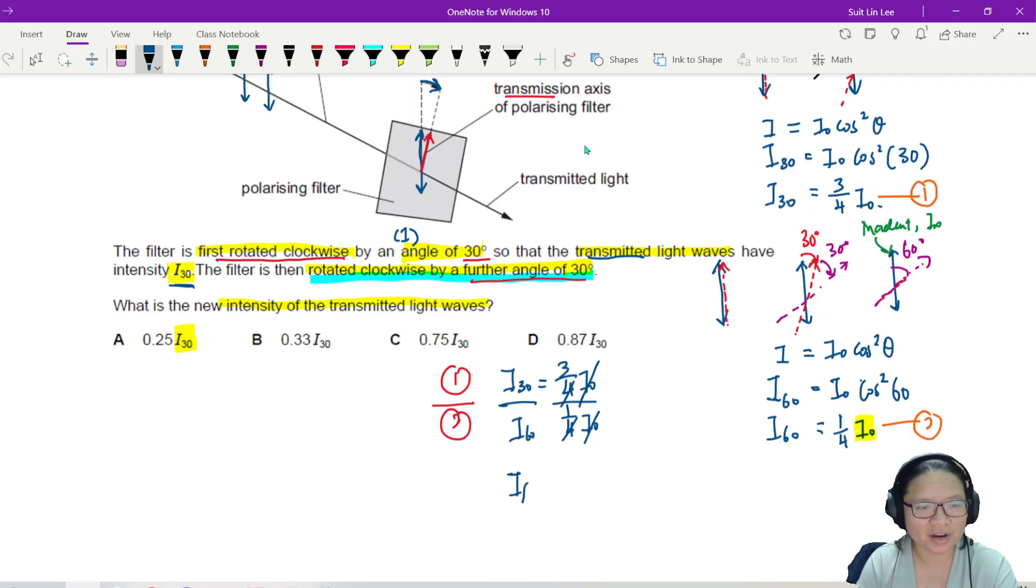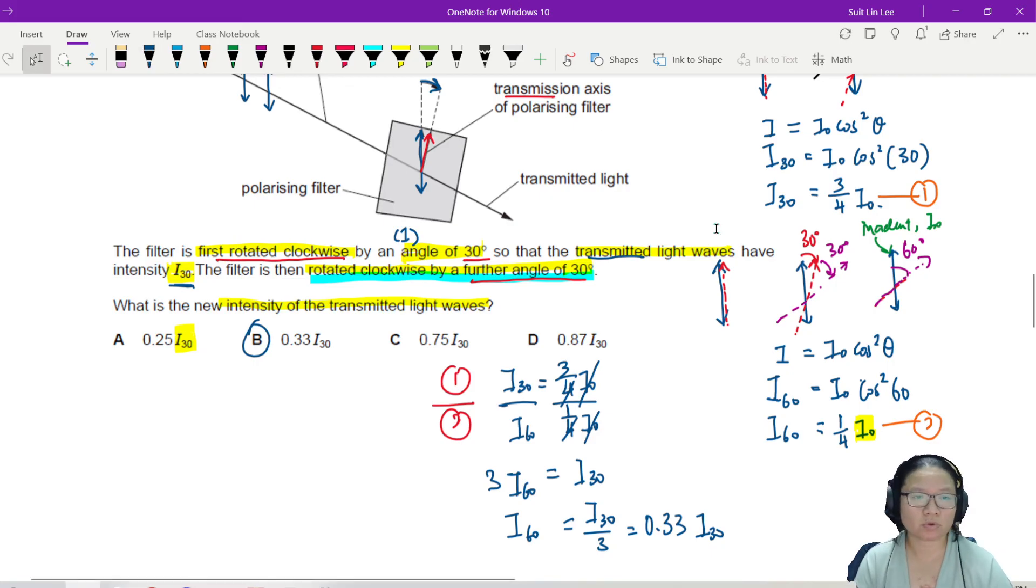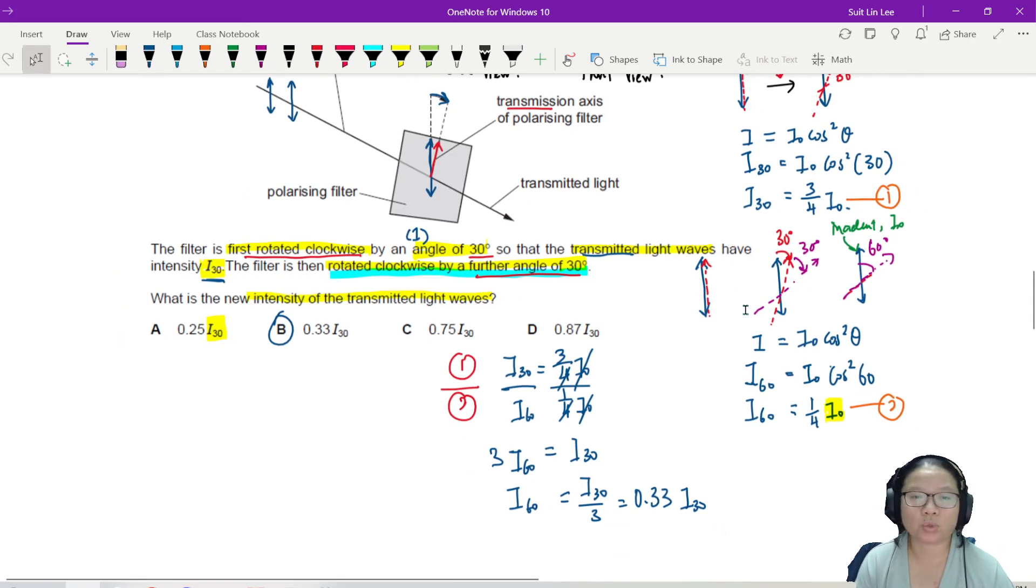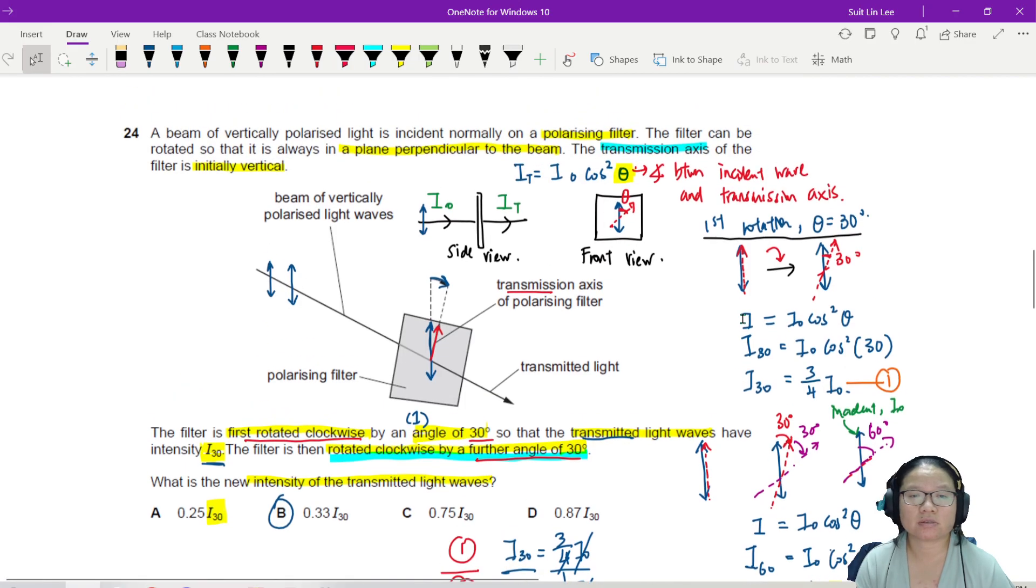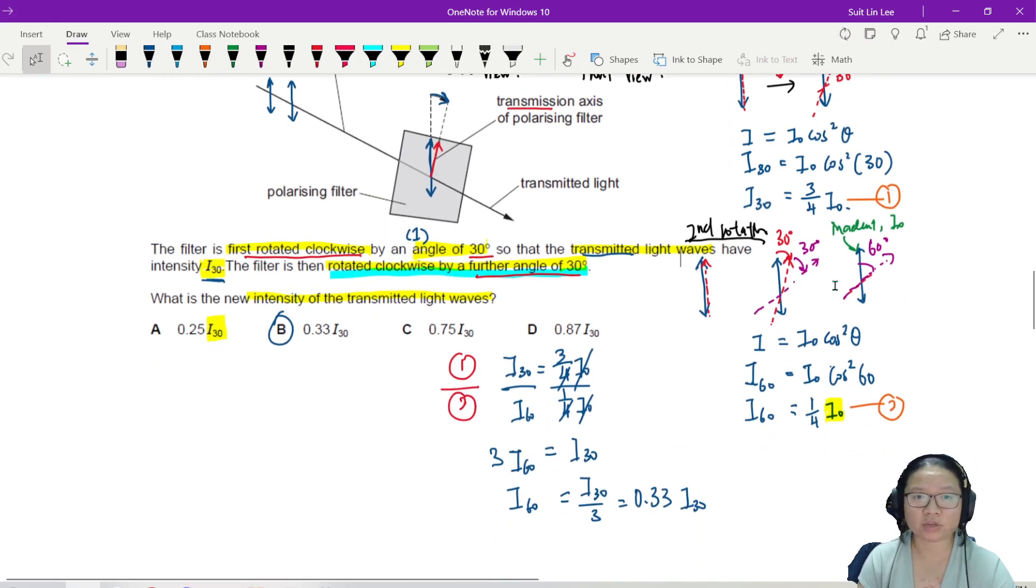So at the end, you will have I 60 brought upwards, or 3 I 60 is I 30. So the transmitted intensity, new intensity is I 30 divided by 3 or 0.33 I 30. So the answer is B. So what did we learn here? We learned that whenever we use this Malus's law equation, we have to visualize carefully for ourselves what is the rotation.